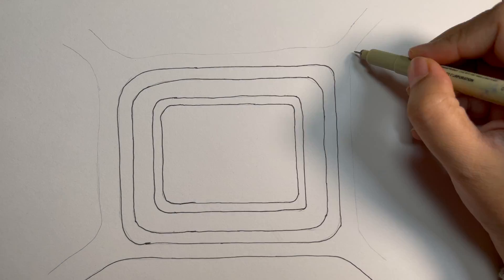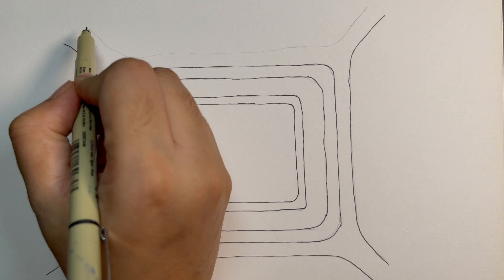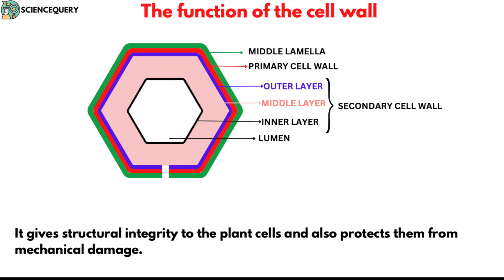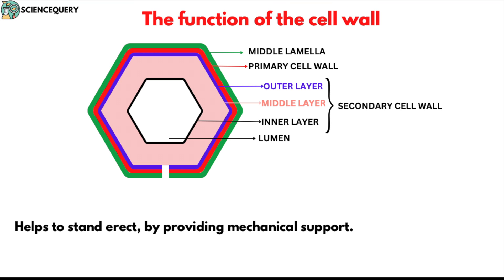Let us deep dive into the various functions of cell wall. A cell wall gives the structural integrity to the plant cell and it protects them from mechanical damage. It also helps in standing erect by providing mechanical support.